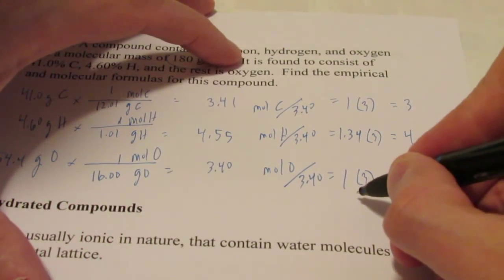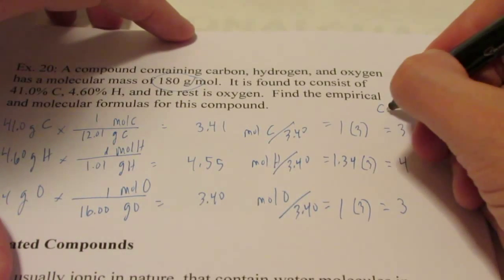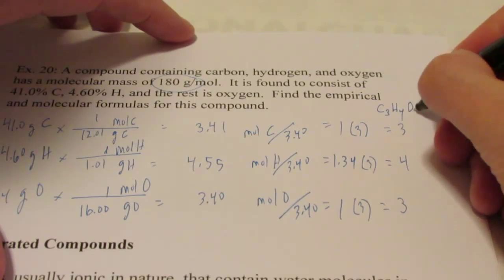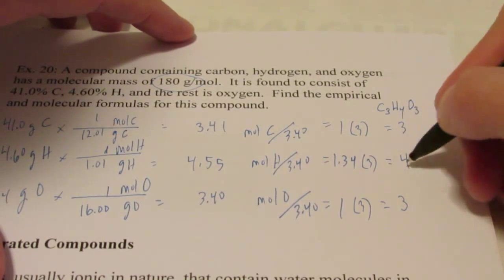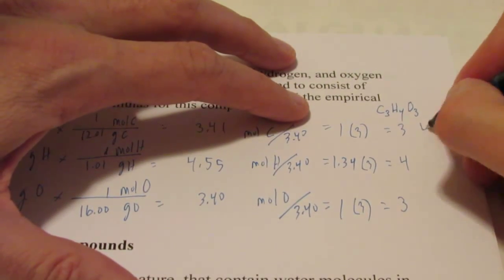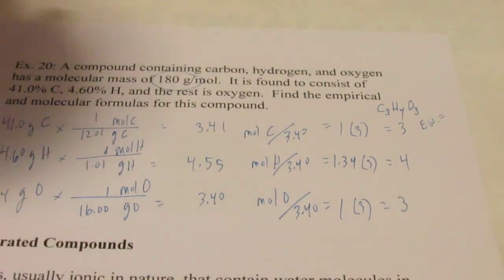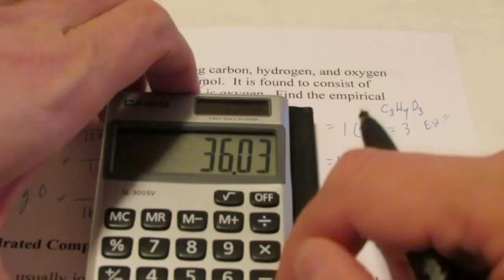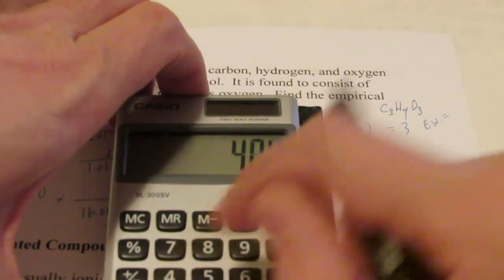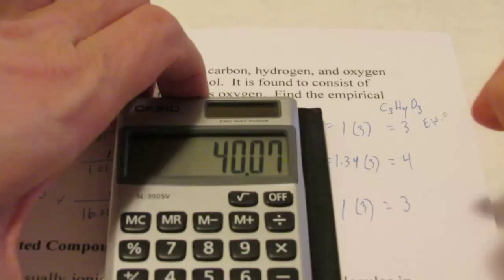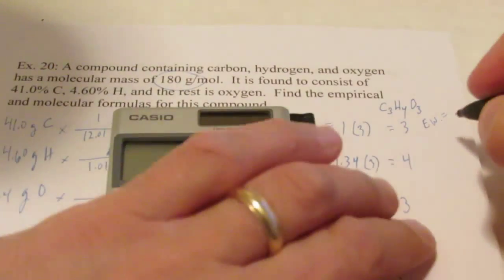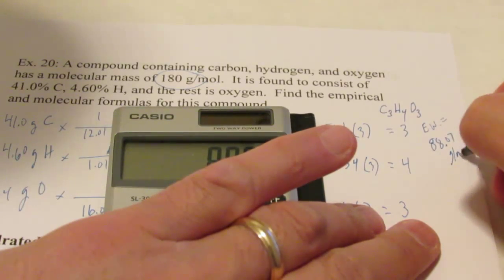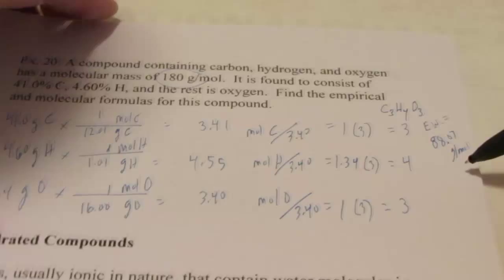So my empirical formula would be, let's write it up here, C3H4O3, right, 3 to 4 to 3. Let's find its empirical weight now. So that's going to be the weight of 3 carbons, so 12.01 times 3, plus 4 hydrogens, so 4 times 1.01, plus 3 oxygens. 88.07 grams per mole. Now is that the same as the molecular weight?